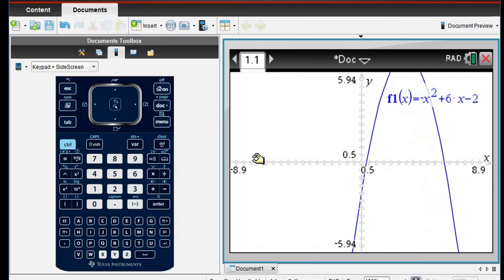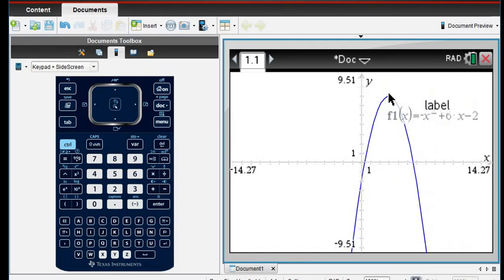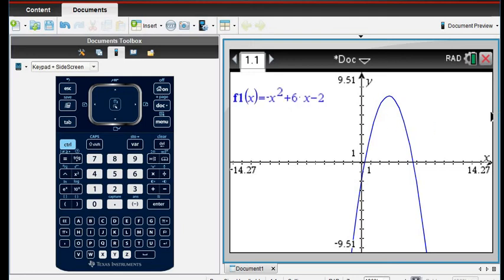you can toggle back and forth, you can zoom in, you can zoom out. As long as you can see the highest point, if this label is in your way, you can grab it and move it out of the way so it's not blocking your view.